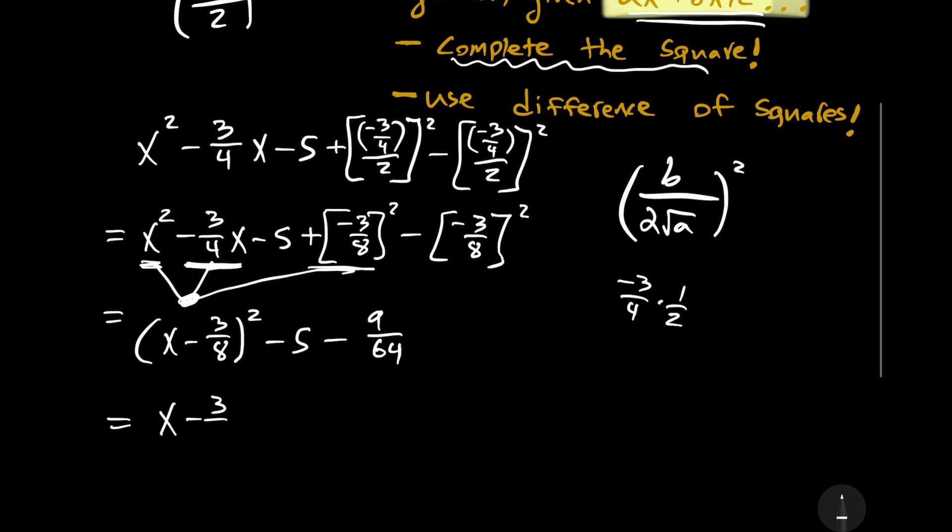And then we can continue to simplify that. So, x minus 3 over 8, that quantity squared. And here, I'm just resorting to a calculator to get minus 329 over 64. It's a bad habit, perhaps, to use a calculator, but that's what I did. So, we completed the square, but now we're going to use the difference of squares.